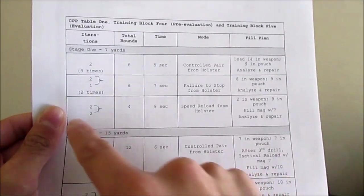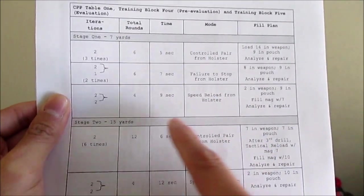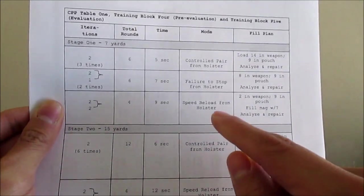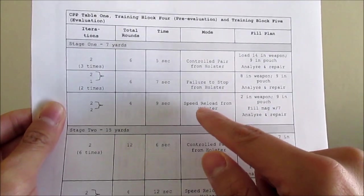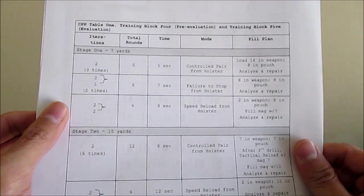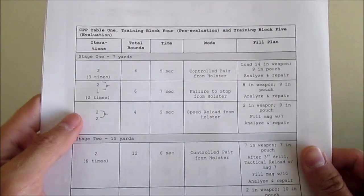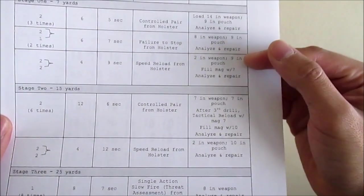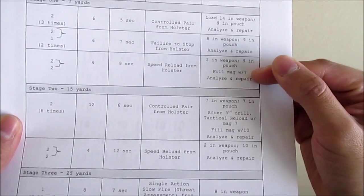And then for this last part at 7 yards, you'll have 2 in the weapon. And then you'll have to take your 2 shots. Drop the mag. Do a speed reload. And then take your last 2 shots. For the last shots at 7 yards. And it tells you here. Fill your mag with 7.